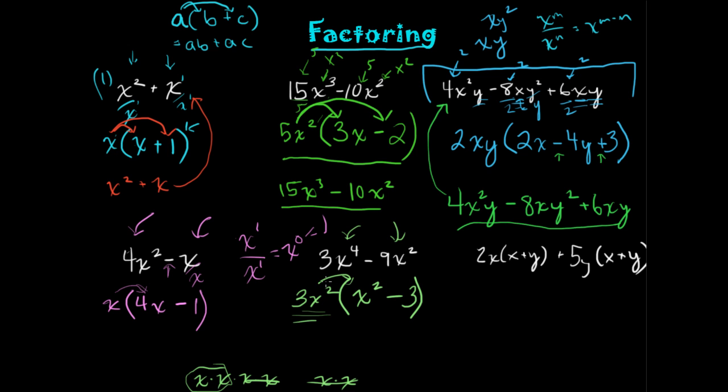Check your answer through the distributive property. You get 3X to the fourth minus 3 times 3 which is 9, X squared. And notice this as well is the same as the original. Good way to make sure you didn't make any arithmetic mistakes.